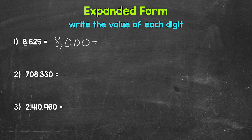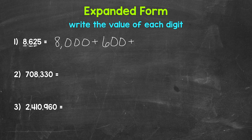The sum of all of the values will equal the original number. Moving to our next digit — we have a six in the hundreds place, so the value of the six is 600. So we put 600 plus. Our next digit is a two in the tens place, so that two has a value of 20 plus. And then lastly, we have a five in the ones place — this five has a value of five. That's 8,625 in expanded form. We expanded that number out to show the value of each digit.